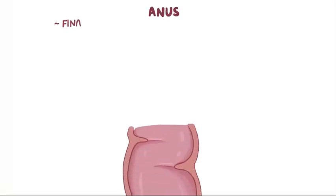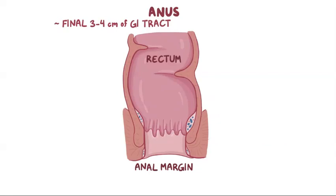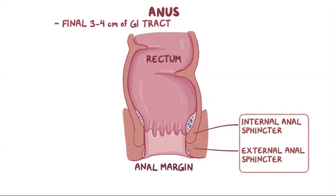The anus is the final 3-4 cm of the gastrointestinal tract, and it extends from the rectum to the anal margin. The top and bottom of the anal canal are surrounded by the internal and external anal sphincters, which are two muscular rings that control defecation. The internal sphincter is under involuntary control, while the external sphincter is under voluntary control.